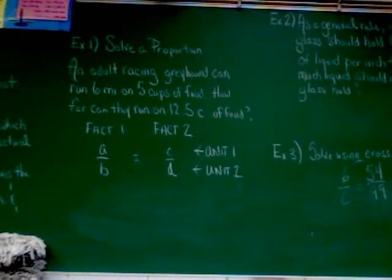As you can see underneath that example, I've given you how to set up a proportion. You want to put all your facts from one set of information on one side and all your facts from the other set of information on the other side. Which side doesn't really matter, as long as you're grouping together. It's also important that all the same units are in the numerators and all the same units in the denominator. You can't mix and match.